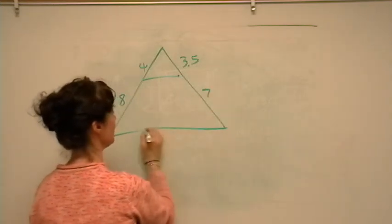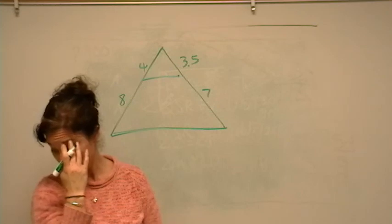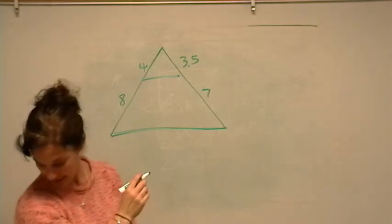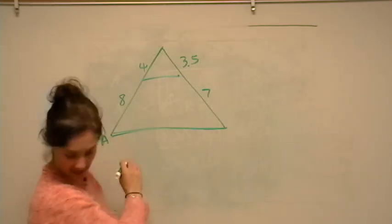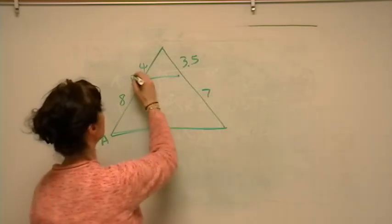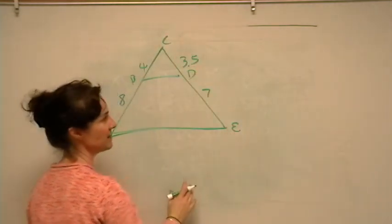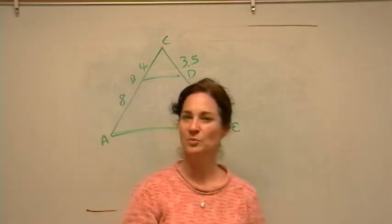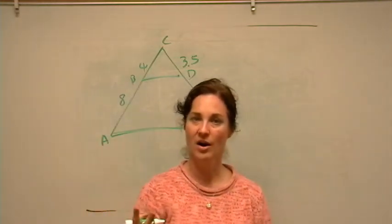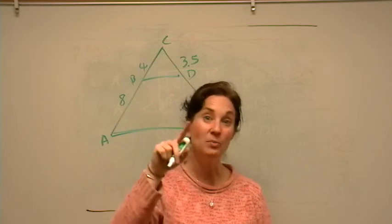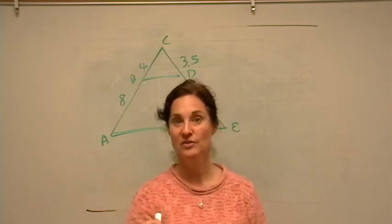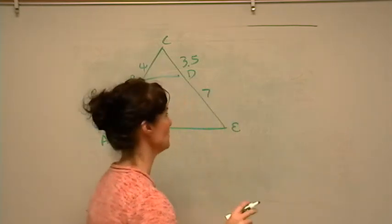And we don't have a third side, so we're going to have to say, maybe we need to do this one by side, angle, side. So we have A, B, C, D, E. Okay, so remember, to do side, angle, side, you prove two sides are proportional, and the angle between those two sides is congruent. The two angles between those two sides.